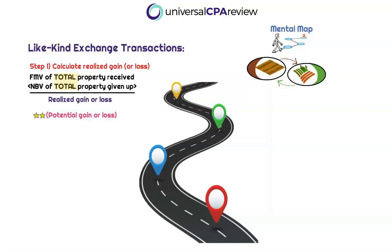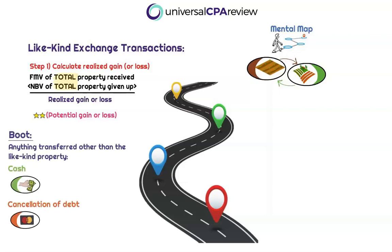We're highlighting the word 'total' because we're not just including the like-kind property received and the like-kind property given up in the step one calculation — we're also including any boot that has been received or transferred. So if we receive a piece of land and we also received cash, this is going to include both the fair market value of that land and the cash received. If we transferred both land and cash, we reduce this by the net book value of the total property given up, which would include the net book value of the property plus any cash paid. Boot can be more than just cash — it can also be cancellation of debt, so we need to be on the lookout for both.